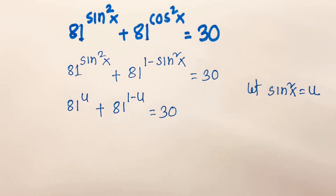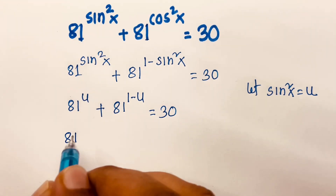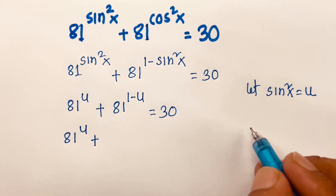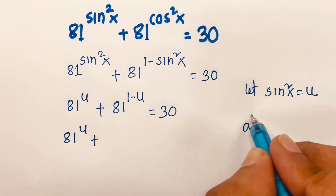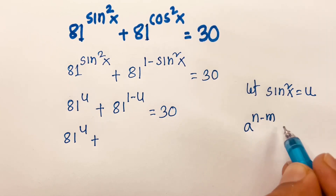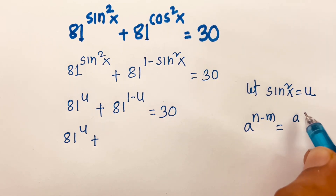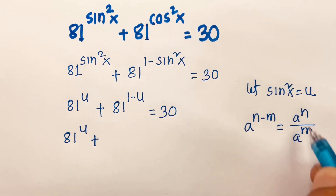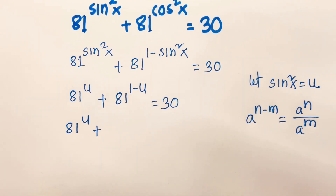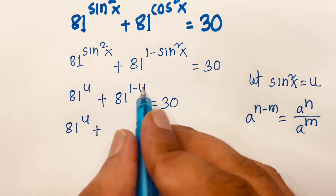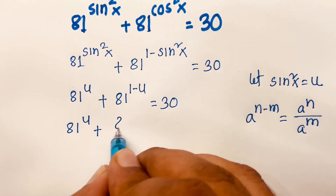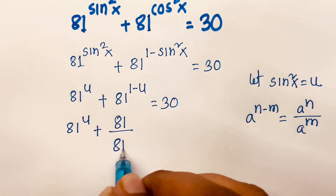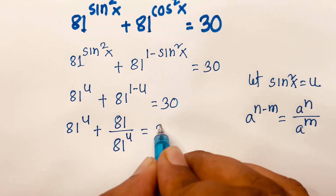Then I can say here is 81 power u, and we know that the exponential rule: a to the power n minus m is equal to a to the power n over a to the power m. So according to this rule, 81 power 1 minus u becomes 81 power 1 over 81 power u, which is equal to 30.